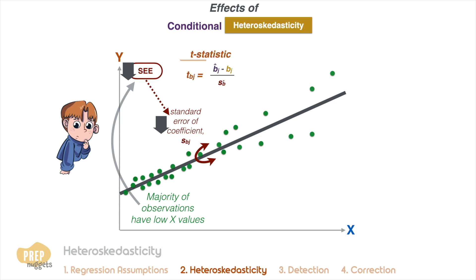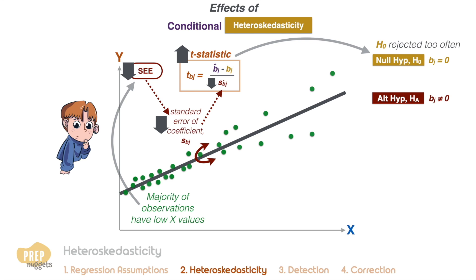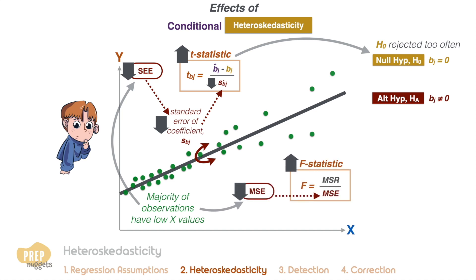Since the standard error of the coefficient is the denominator in the calculation of the t-statistic, and the estimate of the coefficient is unaffected, the t-statistic will be too large. Because of that, the null hypothesis of no statistical significance is rejected too often. Likewise for the F-test, MSE is underestimated, so the F-statistic is too large, meaning the null hypothesis is rejected too often. This can imply that there are too many Type 1 errors.